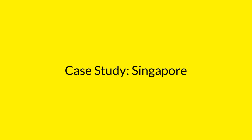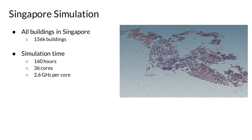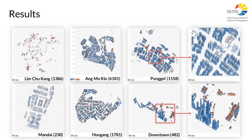The first case study focused on Singapore. A CityGML LOD2 model of the whole city was simulated. The CityGML model contained 156,000 building structures; after filtering out small buildings and other small structures, 132,000 buildings were further analyzed. The final simulation for the Singapore model took 160 hours to complete on 36 cores, each at 2.6 GHz. The results were further analyzed using the Tableau Data Visualization Tool, and window-to-wall ratios for roofs and facades were used to calculate the solar PV potential achievable in each district.